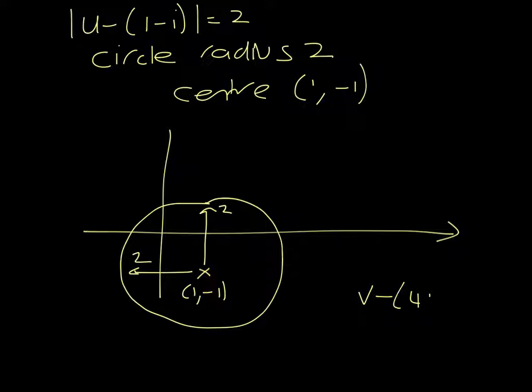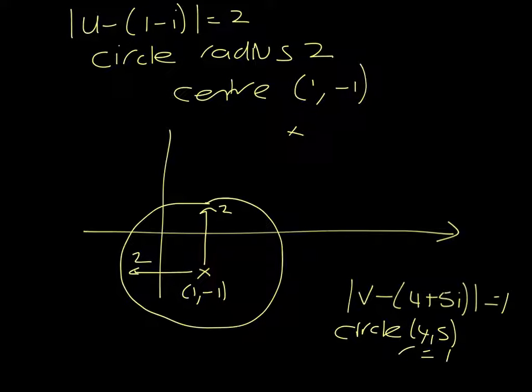Then we have v minus 4 plus 5i modulus equals 1. So that's going to be a circle which is the center at 4, 5, and its radius is 1. So if I go here and draw my circle, we'll call this circle 1 and circle 2. So u is any point here in this circle, or sorry, v is any point here in this circle, u is any point here in this circle.